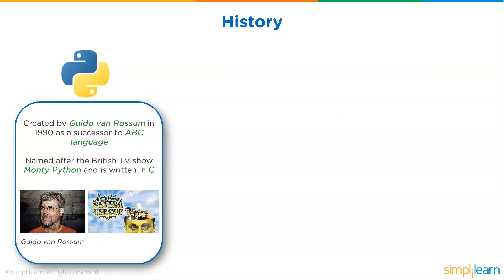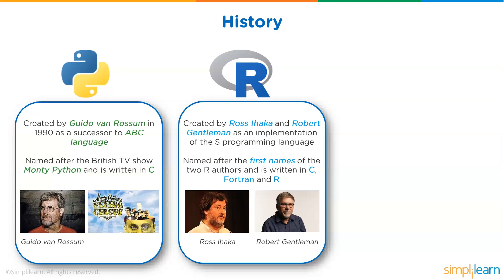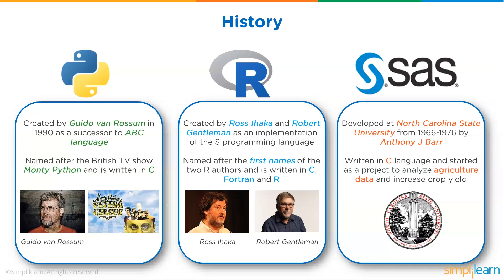Looking at history: Python was created by Guido van Rossum in 1990 as a successor to ABC Language, named after the British TV show Monty Python, and is written in C. R was created by Ross Ihaka and Robert Gentleman as an implementation of the S programming language, named after the first names of its two authors, and is written in C, Fortran, and R. SAS was developed at North Carolina State University from 1966 to 1976 by Anthony J. Barr, written in C, and started as a project to analyze agricultural data and increase crop yield.